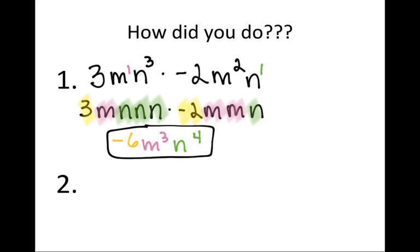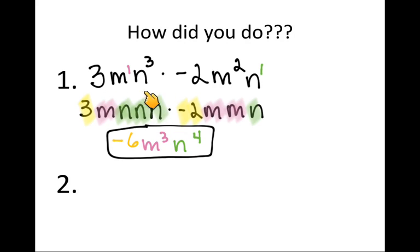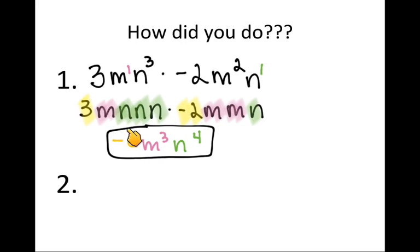Let's see how you did. For 3m to the 1st power n cubed times negative 2m squared n: expanding gives 3 × m × n × n × n × (−2) × m × m × n. Coefficients: 3 × (−2) = −6. Count m's: 3, so m cubed. Count n's: 4, so n to the 4th power. Answer: negative 6m cubed n to the 4th.